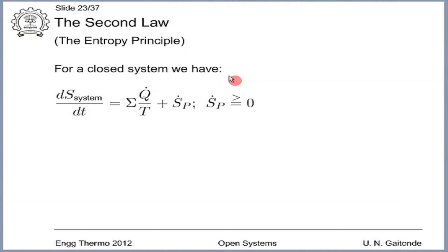I forgot to mention that it is my habit to write 'greater than or equal to' or 'less than or equal to' by two symbols stacked over each other, rather than the standard mathematical symbol. I prefer this notation because it visually tells us it can be greater than 0 or equal to 0, and the equal to 0 has a special connotation — it means the reversible limit. I would like to continue using this nomenclature, though I do not insist others use it.